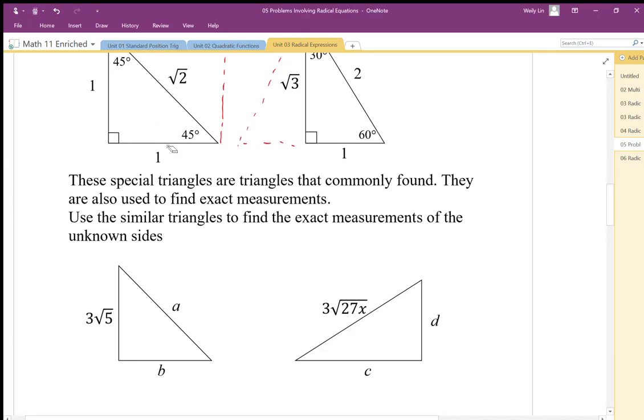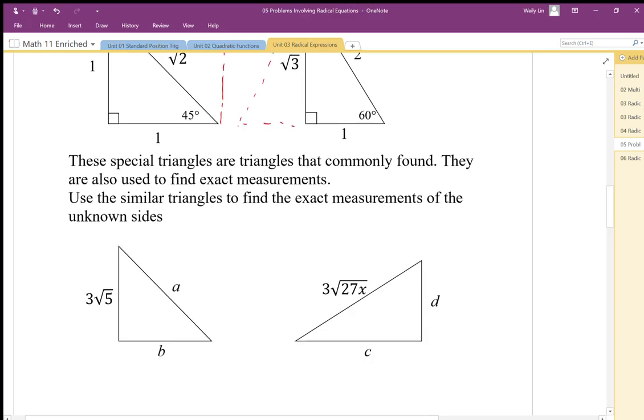The other thing that we could do is we can set a ratio within the triangle. These are trig ratios. So 1 to 1, root 5 to B is the same ratio as 1 to 1. I'm going to do this first one using a trig ratio.